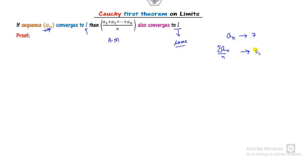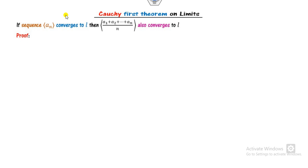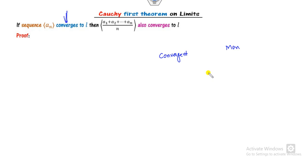The proof is very simple. If you look carefully at the statement, it only talks about convergence. So in this proof we are only dealing with convergence — there is no need for a monotonic sequence, because monotonicity is not mentioned in the statement.